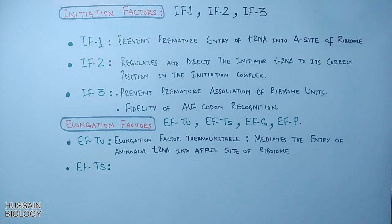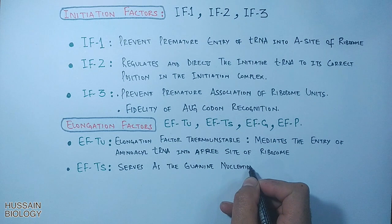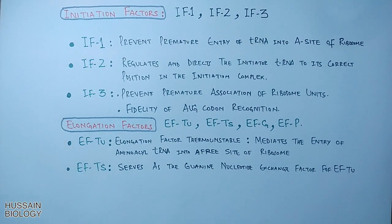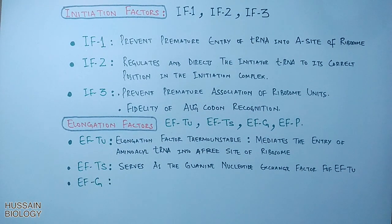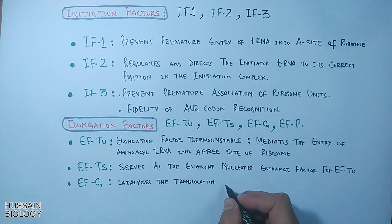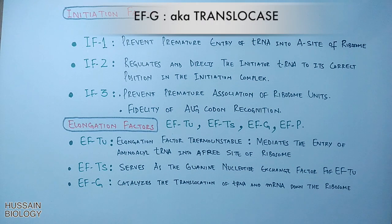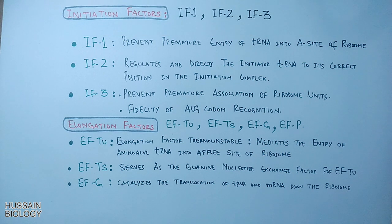EF-Ts is the thermostable elongation factor — it serves as the guanine nucleotide exchange factor for EF-Tu. Then we have EF-G, which catalyzes the translocation of tRNA and mRNA along the ribosome, which is why it is also known as translocase. EF-G has another important function at the end of translation.